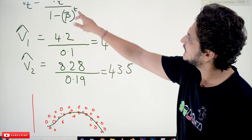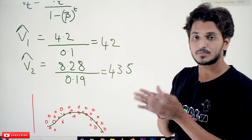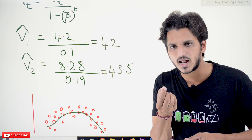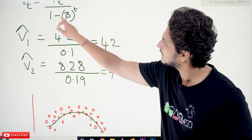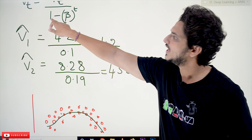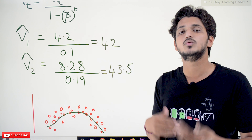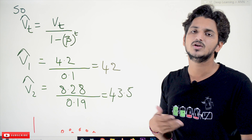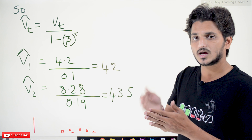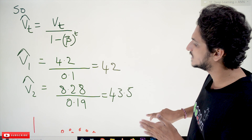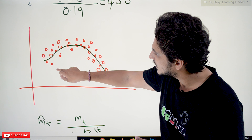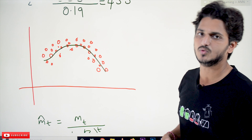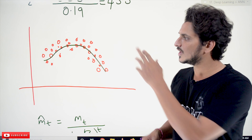Whenever Beta^t is increasing — for example when t = 100, Beta^100 is a very, very small value. So 1 minus a very, very small value is almost equal to 1. That means Vt / 1 ≈ Vt, so we get the same value. After many data points, the correction has negligible effect — it only matters at the beginning. That's why we use this concept.